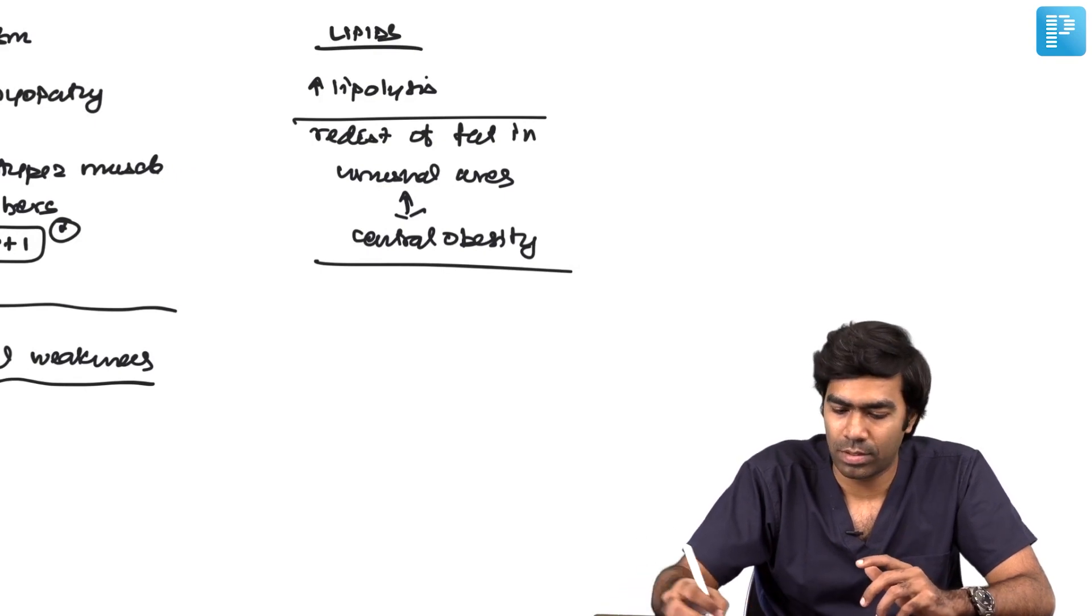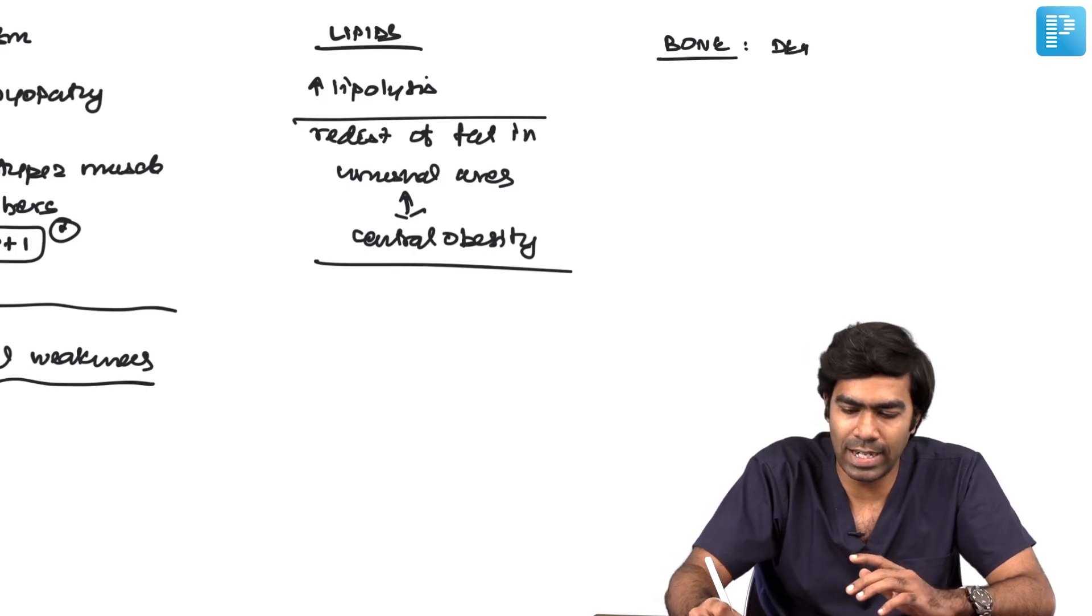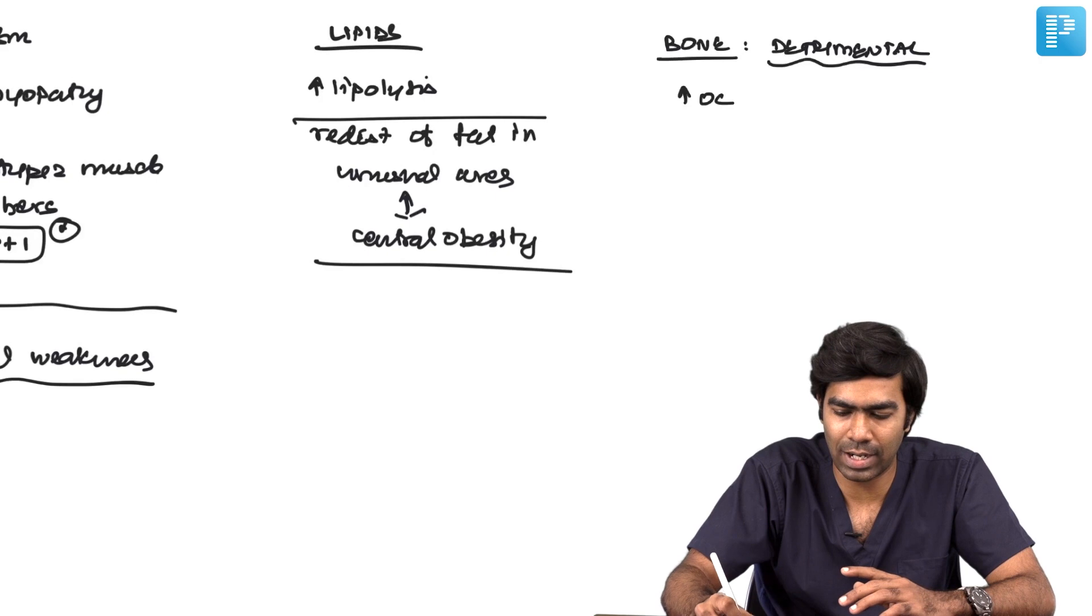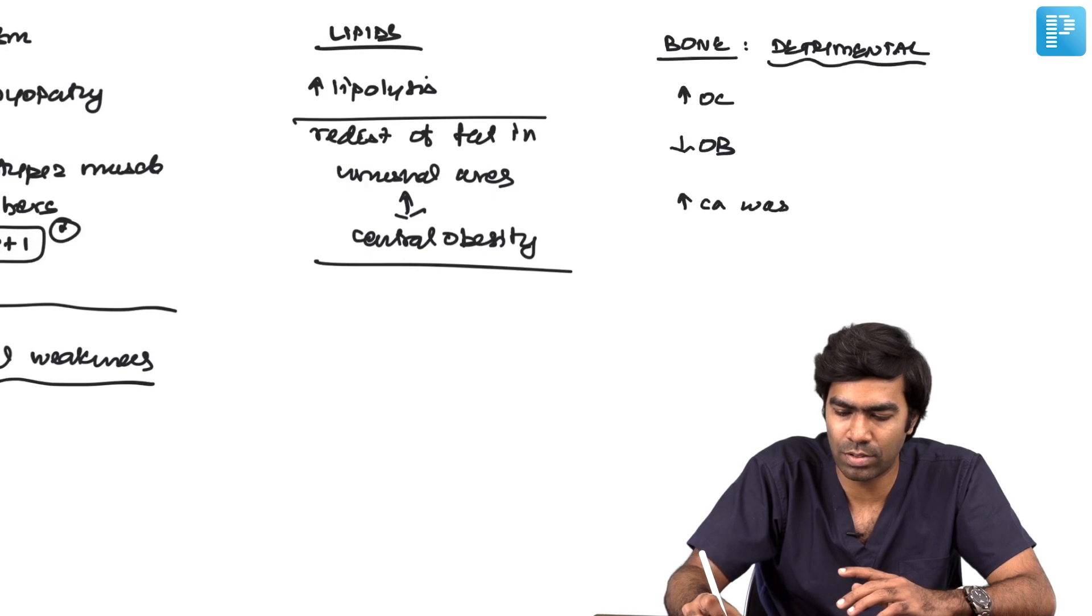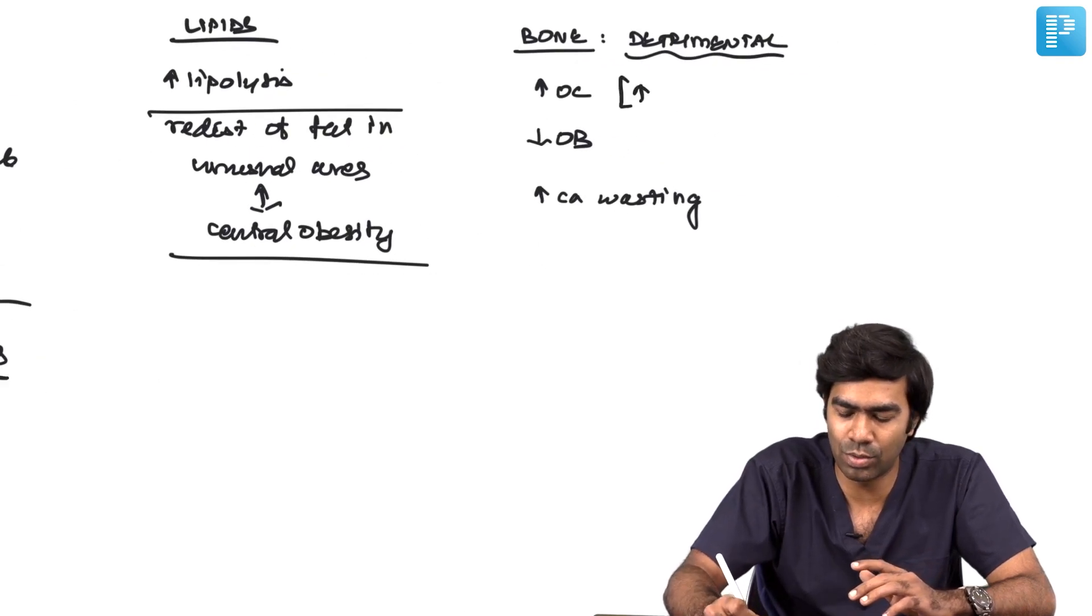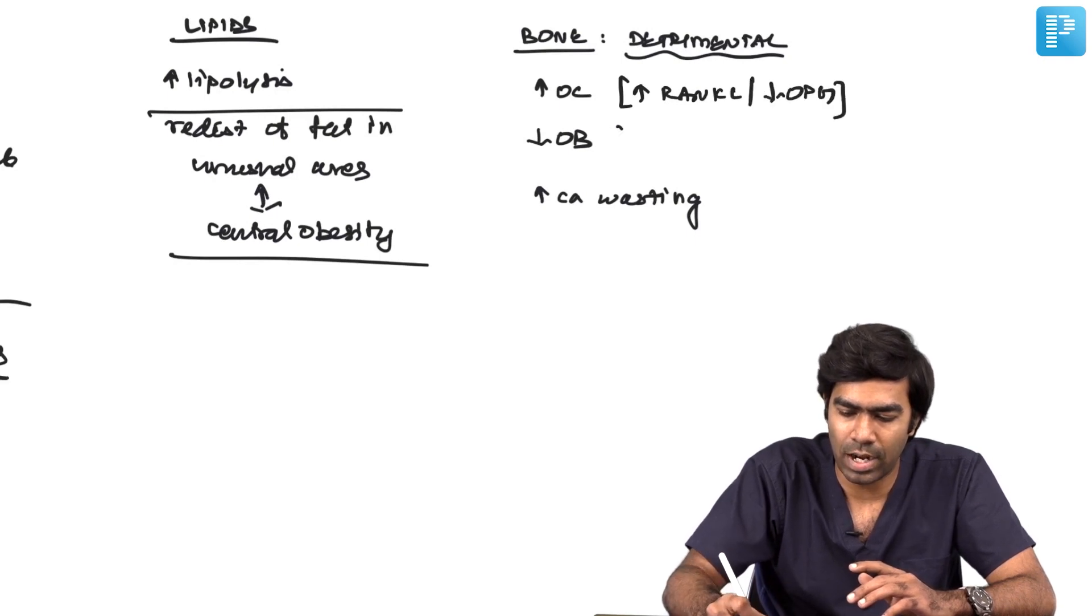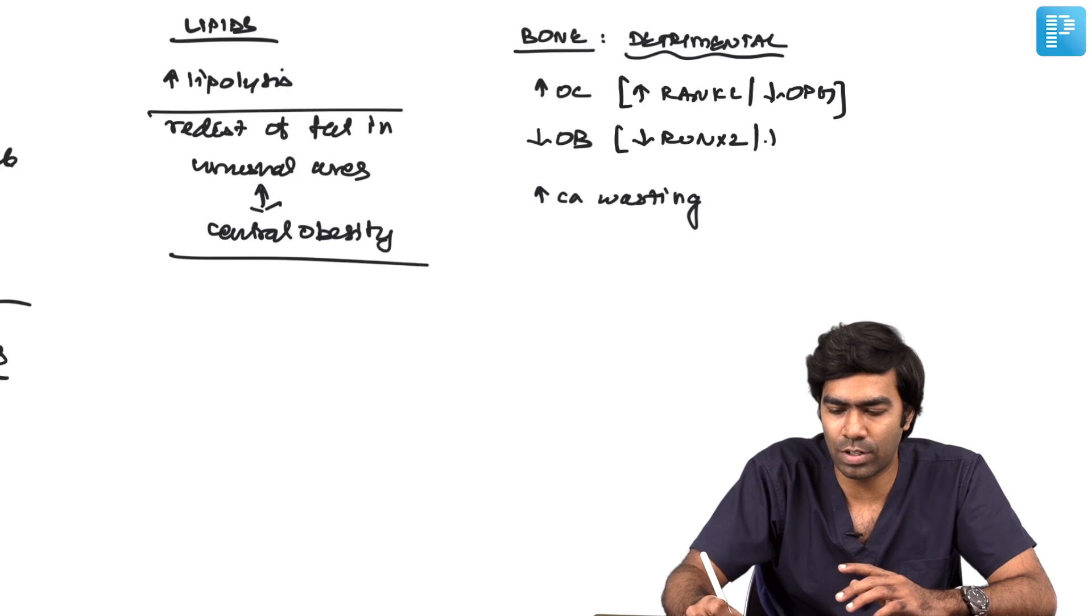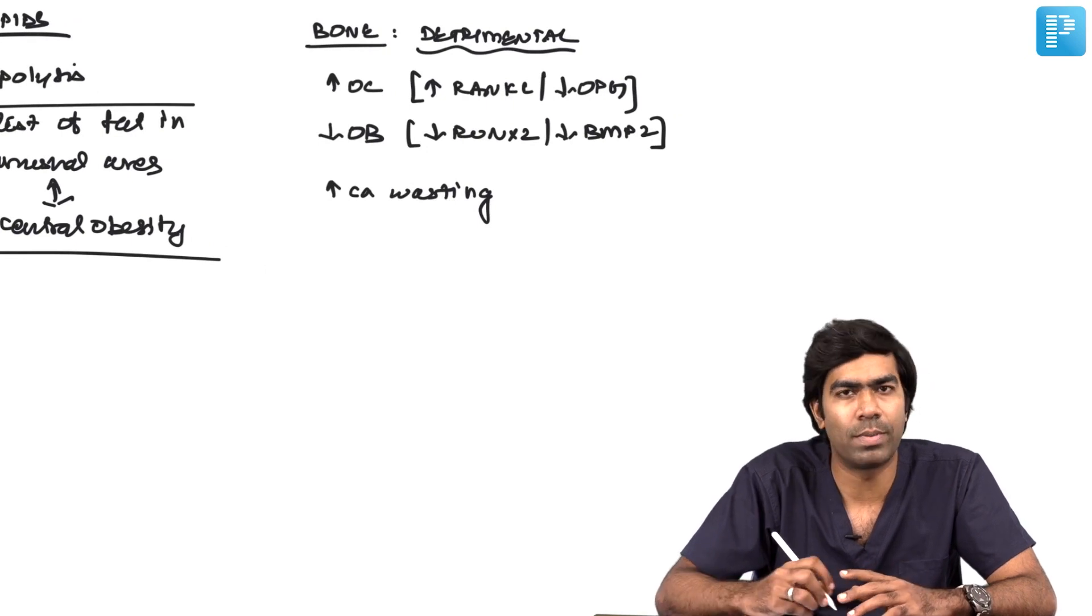On bone and calcium, overall the effect on bone is highly detrimental. Steroids increase osteoclastic activity and reduce osteoblastic activity. They also increase calcium wasting in the body. Increased osteoclastic activity is due to increased RANK ligand expression and reduced osteoprotegerin. Decreased osteoblast activity is due to reduced RUNX2 expression and reduced bone morphogenic protein 2 expression.